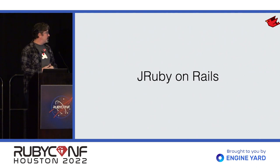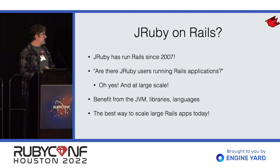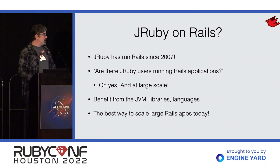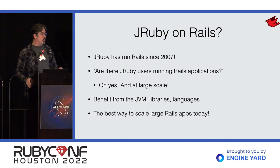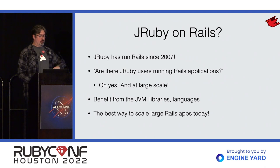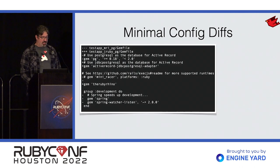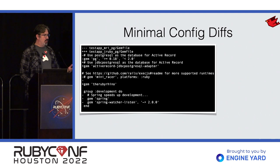The biggest use case for Ruby folks on JRuby is JRuby on Rails, and it absolutely works — very well. There are hundreds, maybe thousands, of people running Rails applications on JRuby. You get all the JVM benefits, and I still believe this is the best way to scale large Ruby applications right now. You can take one JRuby instance and run your entire site. Configuration differences when migrating are usually pretty small. There are a few gems we don't support — for example, mini_racer, which is based on V8; we have a different JavaScript implementation based on Rhino or Nashorn.